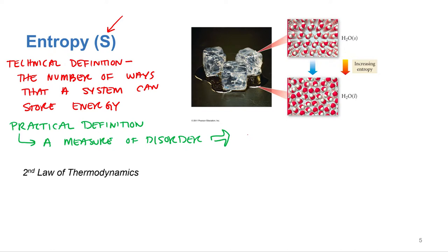And so what that means is the more disordered something is, the higher the entropy. So we would say water in the liquid phase has higher entropy than water in the solid phase.